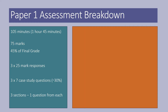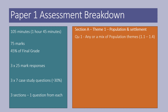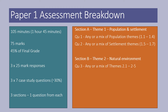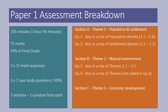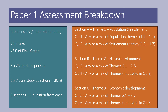There are three sections and you answer one 25-mark question from each. Section A is theme one: population assessment. Question one is any or a mix of population themes; question two is any or a mix of assessment themes. Section B: question three is any or a mix of themes 2.1 to 2.5, whereas question four is any or a mix of themes not asked in question three. Section C is from theme three: question five, any or a mix of themes from 3.1 to 3.7, and question six is any or a mix of themes not asked in question five.